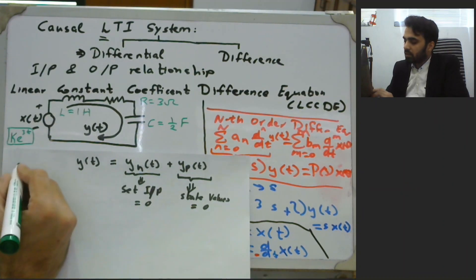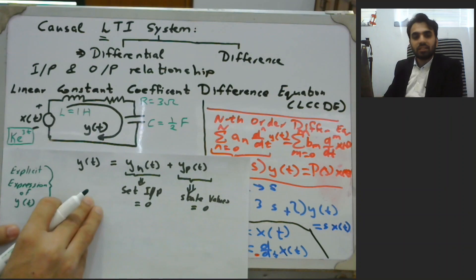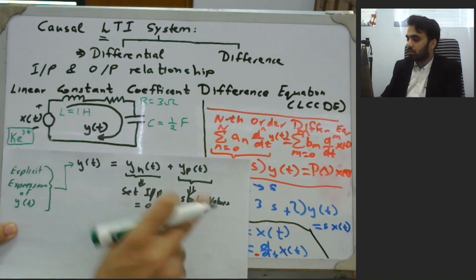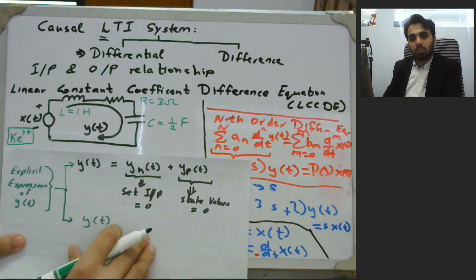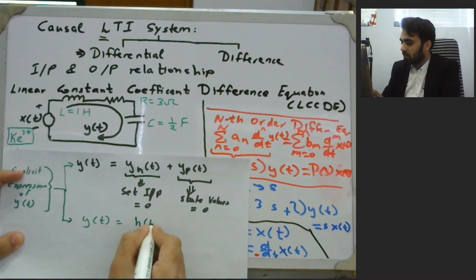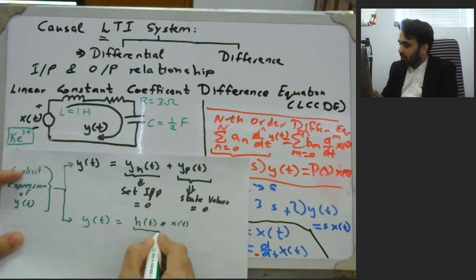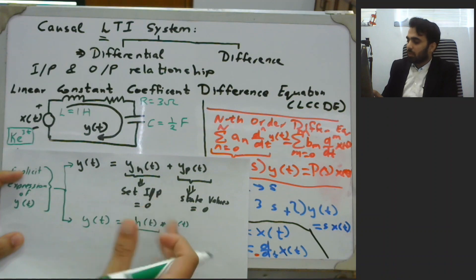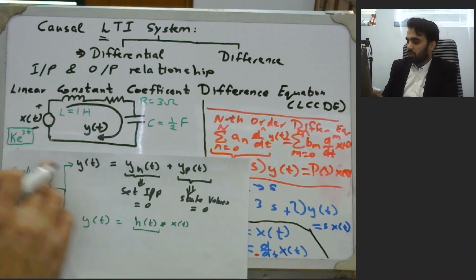An explicit expression for y(t) can be found as the sum of the zero-input response and the zero-state response. It can also be found by means of an impulse response — if we find h(t) and then convolve it with input x(t), we get y(t). The impulse response h(t) fully characterizes the system, so for any given input — be it k·e^(3t), a sinusoidal, or any other function — we can find y(t).